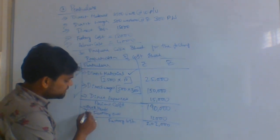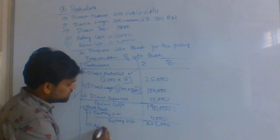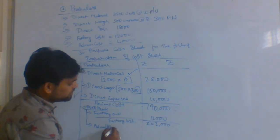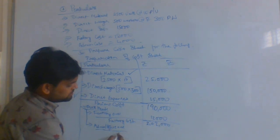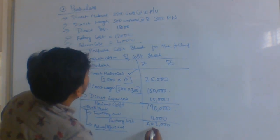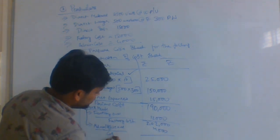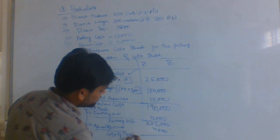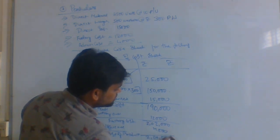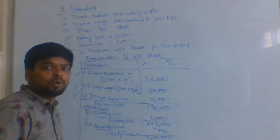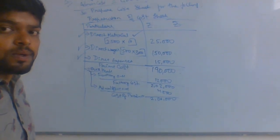The next overhead is office and administration overhead. The second overhead is 4,000. If you add the office cost, you will get cost of production: 2,02,000 plus 4,000 equals 2,06,000.